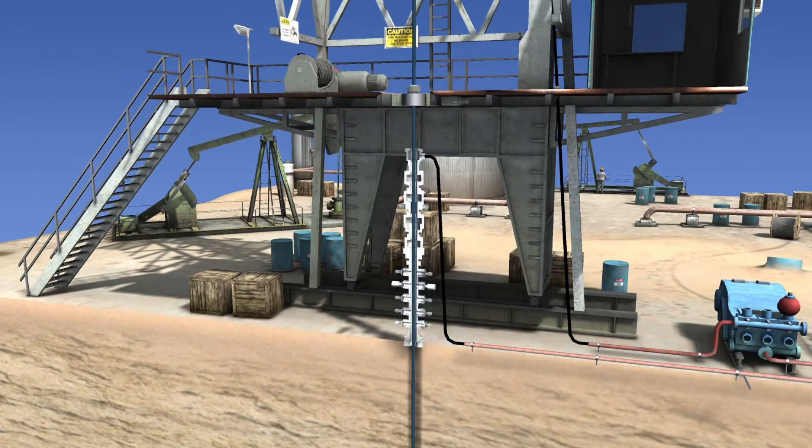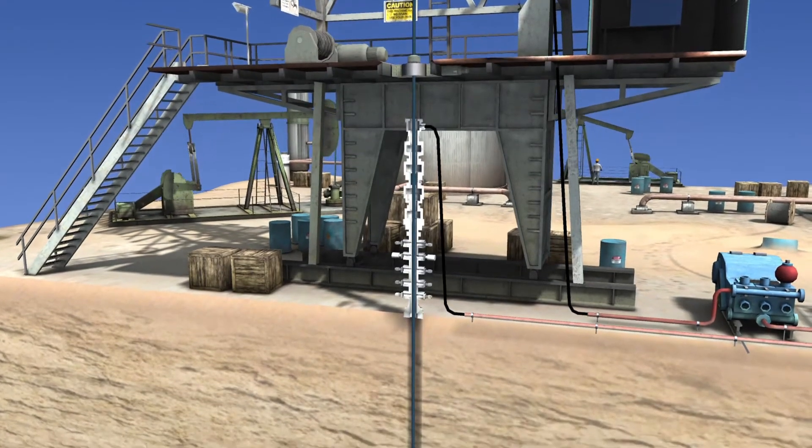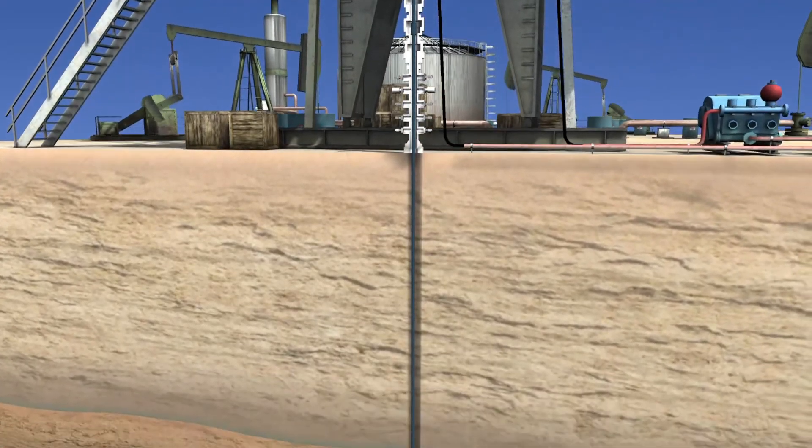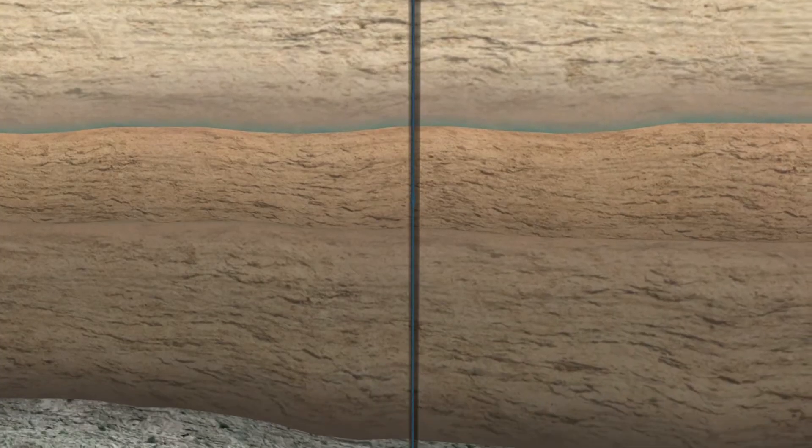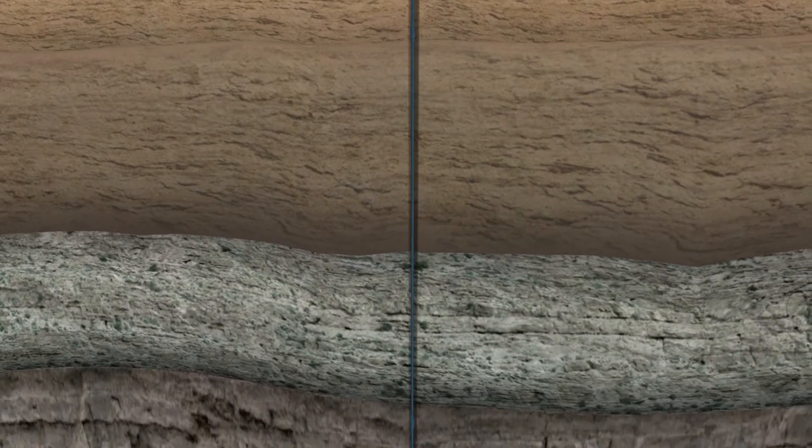Drill strings are rotated by engines on the surface. The drill bit found at the end of the drill string breaks up rock formations, allowing the string to penetrate deeper. Drilling is completed after the depth of the well is determined based on the information acquired.